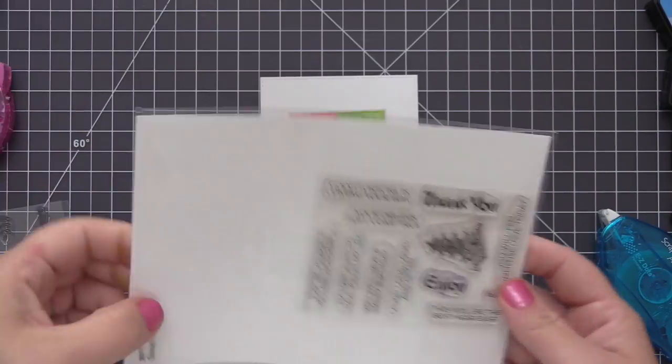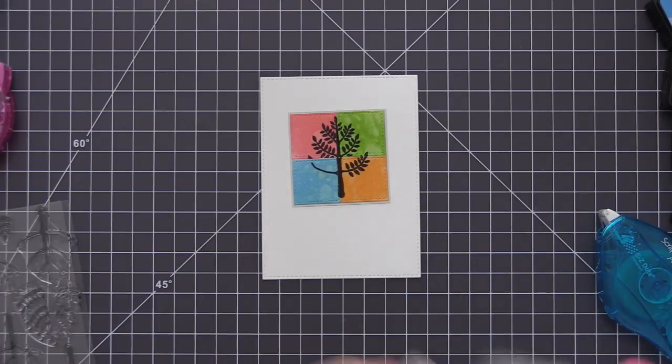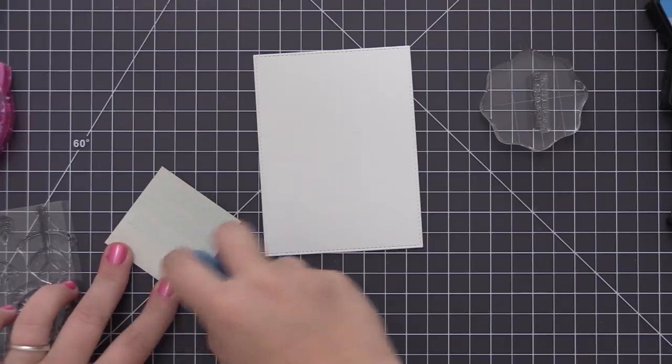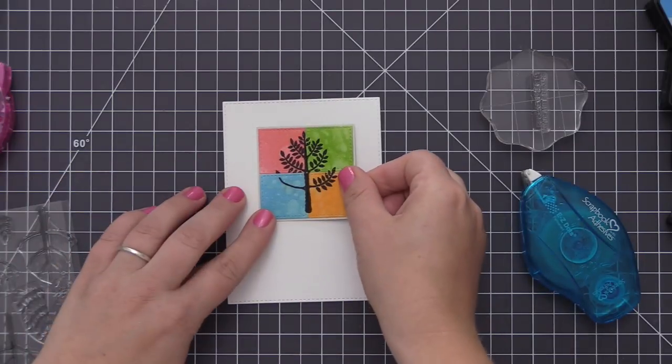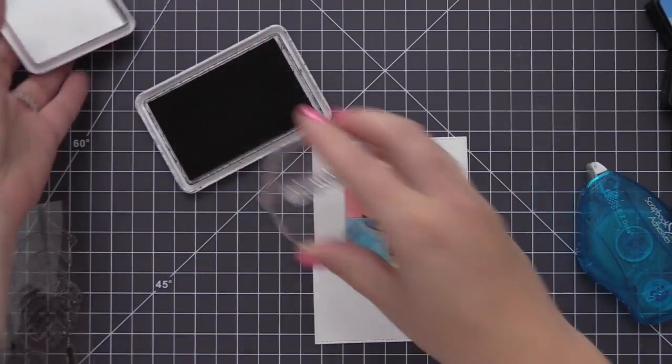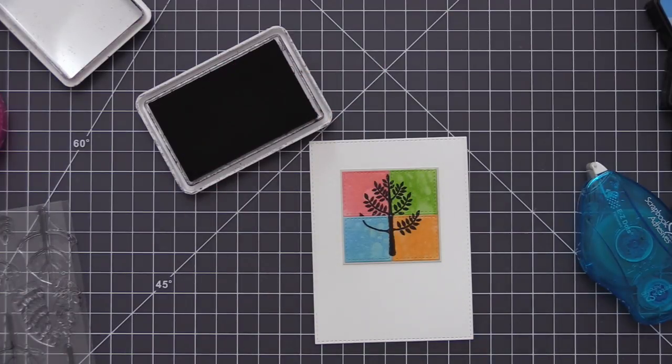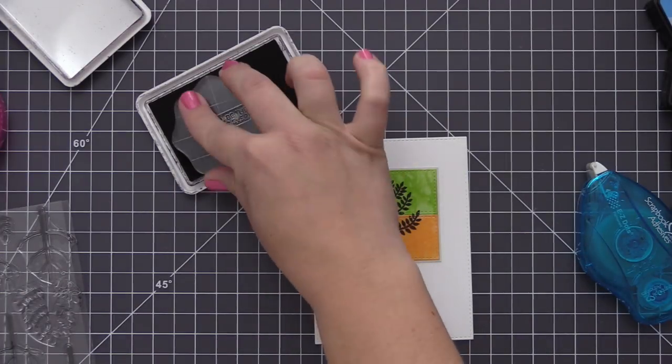For the sentiment I'm using this will be the best year ever. This is from the good fortune stamp set and I thought it would be really nice with this image just because we have all four seasons showing on here and I thought the sentiment went really nice with that. It's a really nice size so it fits nicely right underneath of that square image that we've created.